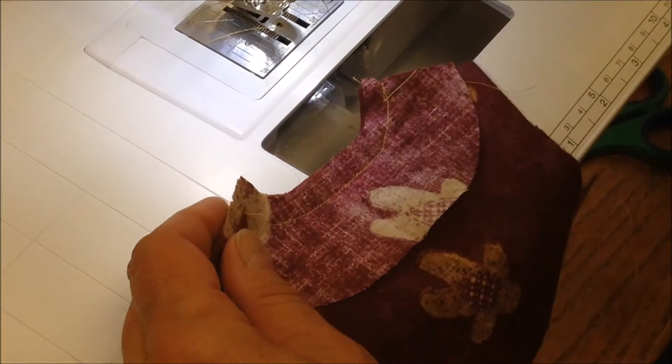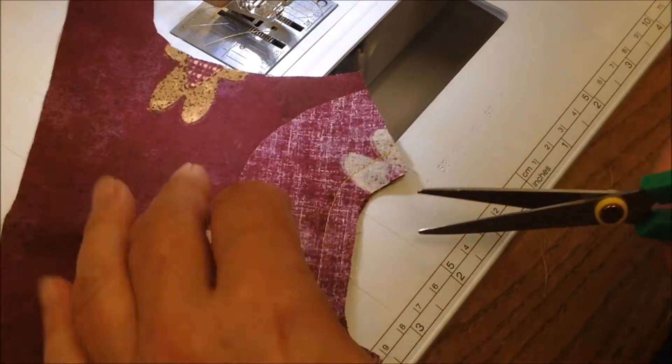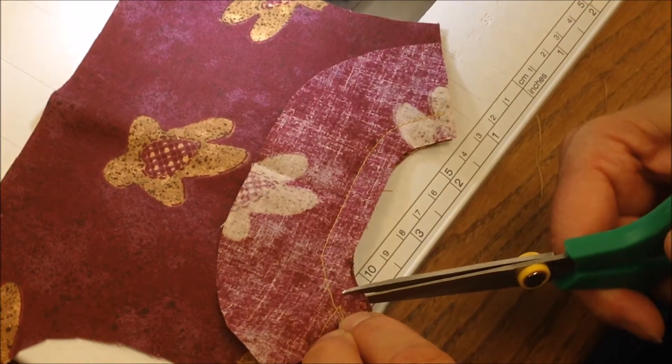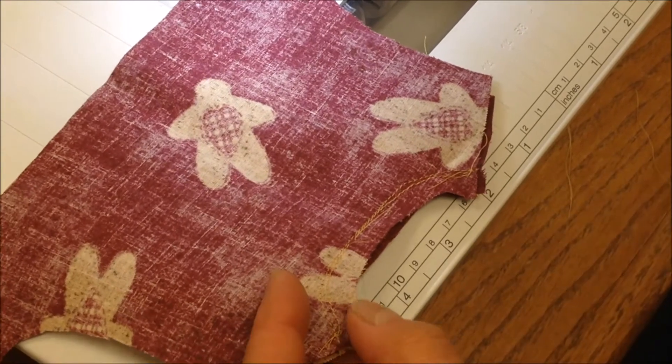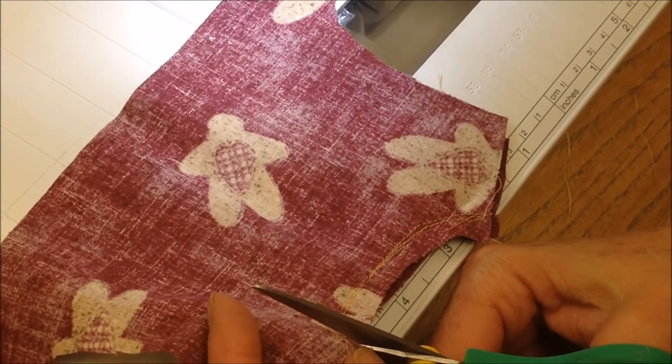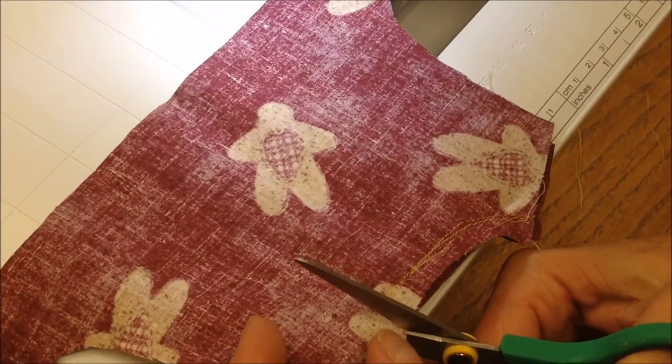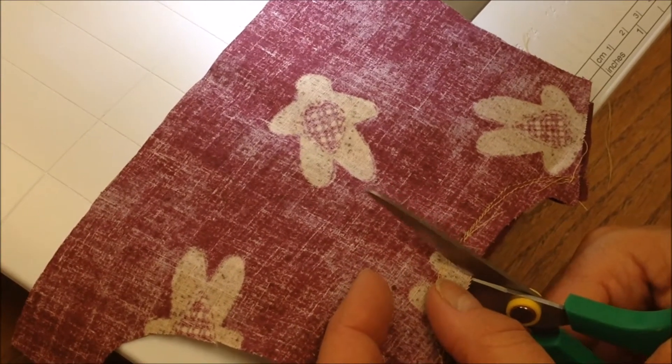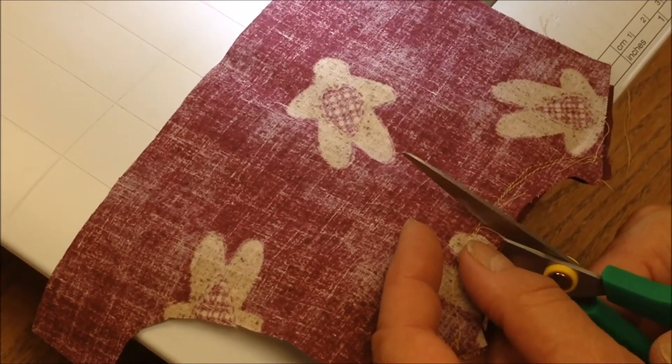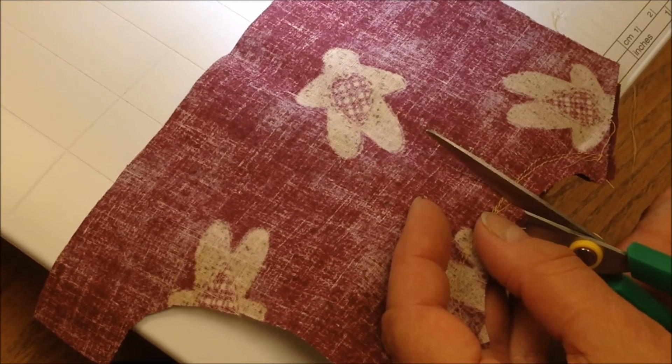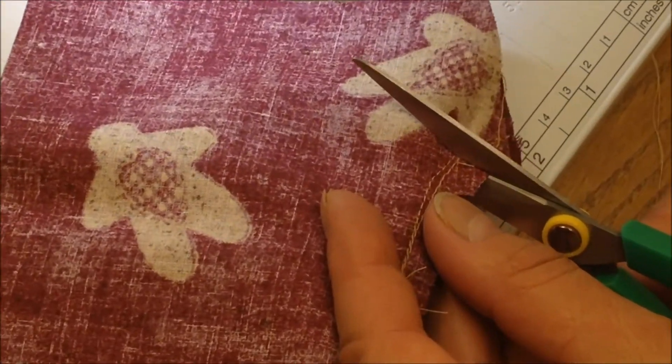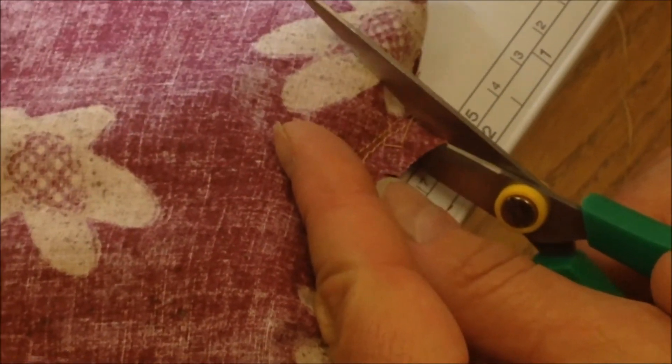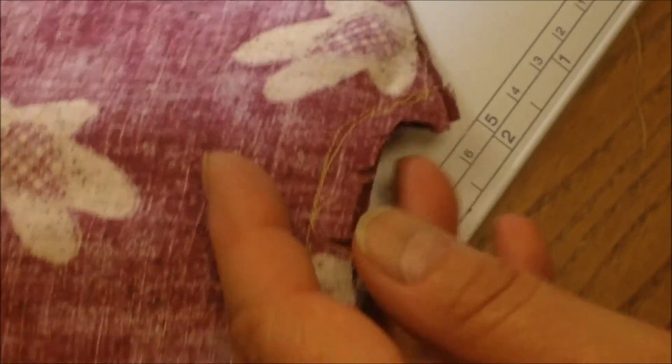In order to release that inside curve, we need to clip it. And we're going to clip down close to our stay stitching. And I need better scissors. So, we'll just do it like this. And we're going to clip about every half inch. Sometimes you have to clip closer together if it's more of a curve, or not as close together if your curve is less.